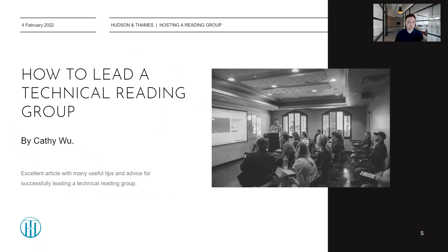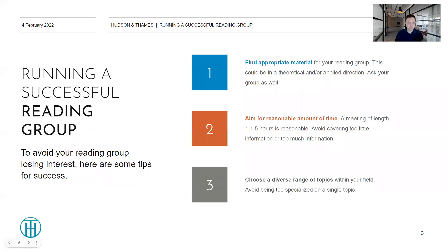The problem is reading groups can lose steam after a while — people stop attending and you want to maintain interest. This leads on to running a successful reading group: keeping interest, how to structure it, and how to choose material. The first point is finding appropriate material. This could depend on the topics that interest your group — it could be theoretical or applied directions.